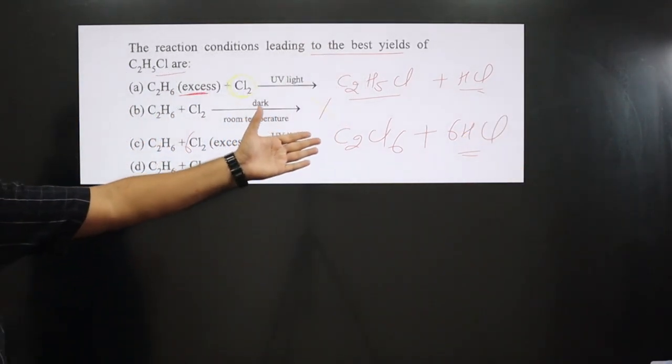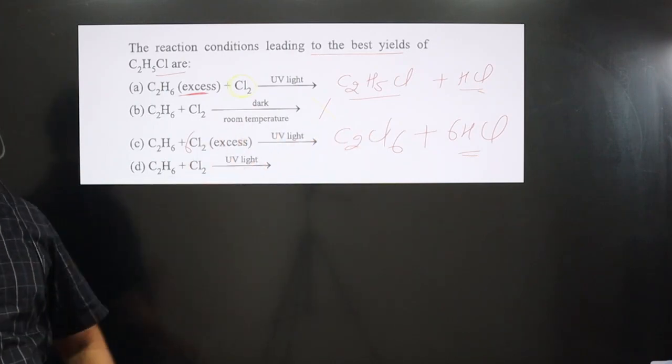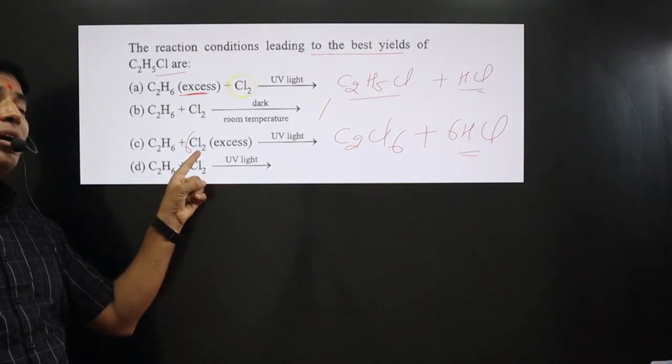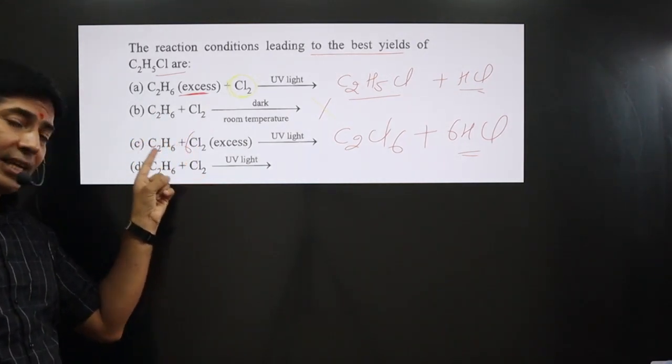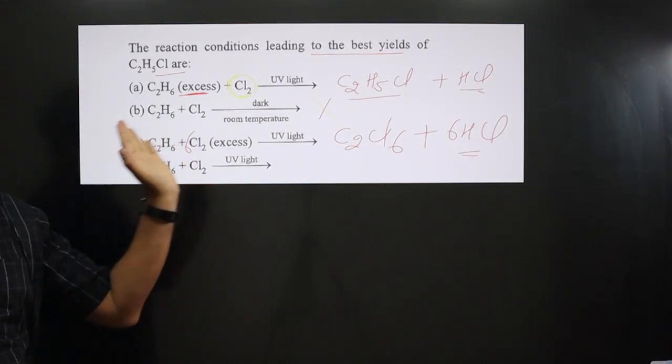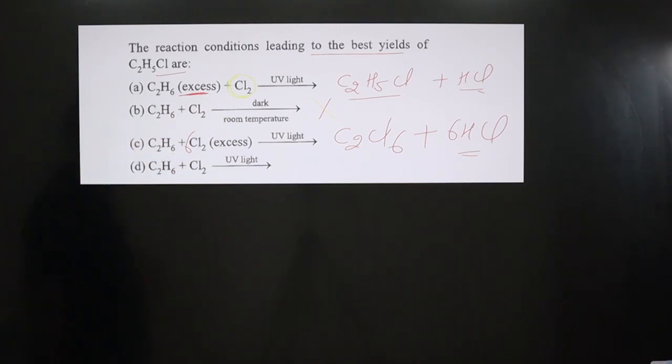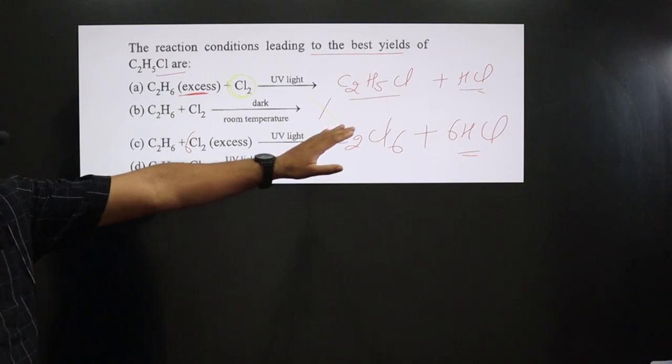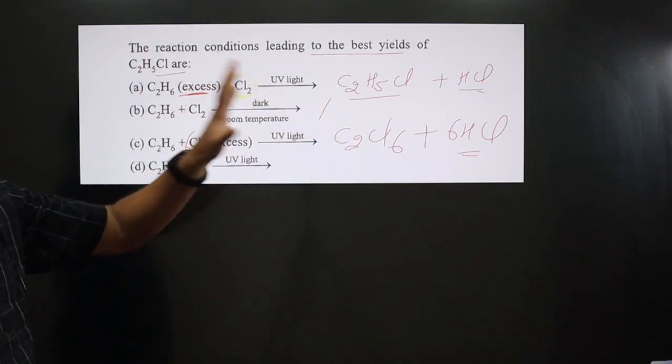From here we are getting C2Cl6 because whatever quantity of Cl is required, you take it, and this Cl2 will keep on reacting with ethane till all the hydrogens are substituted by halogen. We are not getting C2H5Cl in this case.